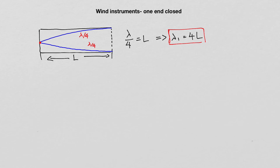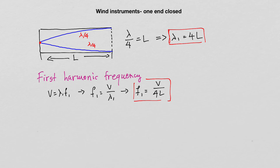Let's also derive the frequency of the first harmonic. Using V = λ₁ × f₁, the frequency f₁ equals V divided by λ₁. Substituting four times L gives: the first harmonic frequency equals the speed of sound divided by four times the length of the pipe.